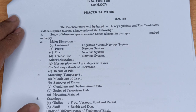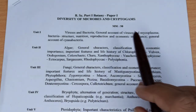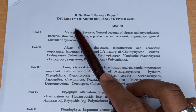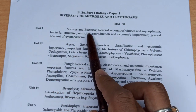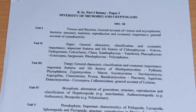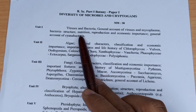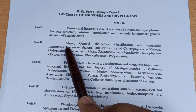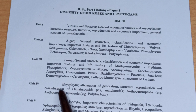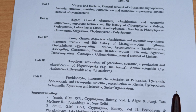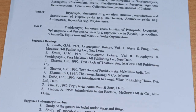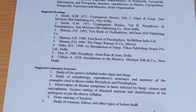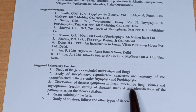अब Botany के syllabus पर आते हैं। यह है BSC Part 1 Botany Paper 1 का syllabus — Diversity of Microbes and Cryptogames। Unit 1 में Viruses and Bacteria, Unit 2 में Algae, Unit 3 में Fungi, Unit 4 में Bryophyta और Unit 5 में Pteridophyta है। Suggested books और suggested laboratory exercises भी mention किए गए हैं।